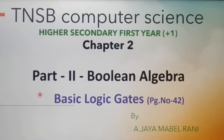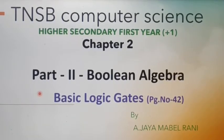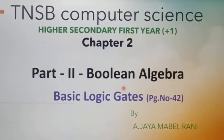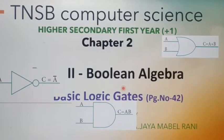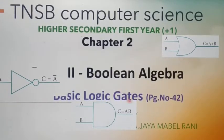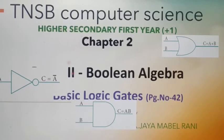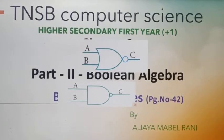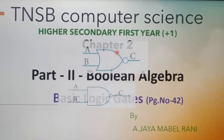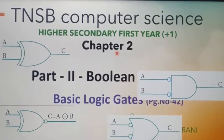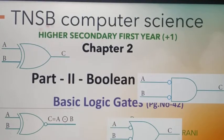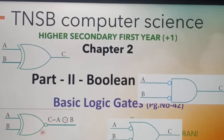In this video we are going to see about Logic Gates from Chapter 2 Boolean Algebra. It's a continuation of the previous video. In the previous video we have seen three fundamental gates such as AND Gate, OR Gate and NOT Gate. Then we have seen two universal gates, NAND Gate and NOR Gate. Here we would learn remaining logic gates namely Bubbled AND Gate, Bubbled OR Gate, Exclusive OR Gate and Exclusive NOR Gate.